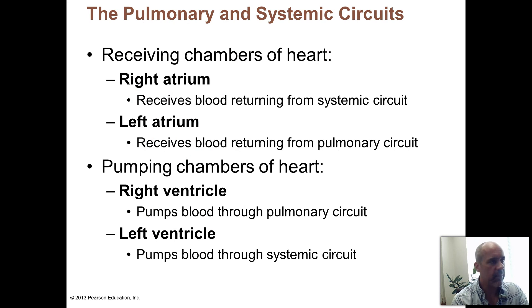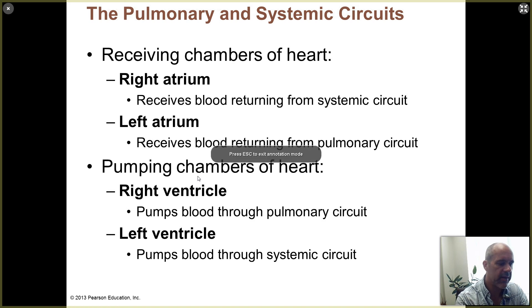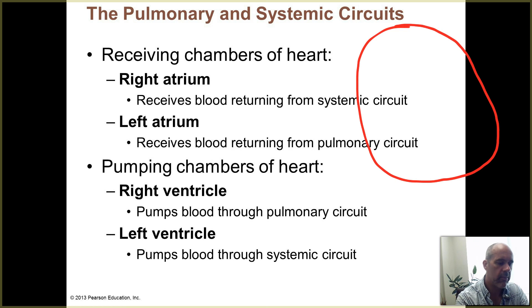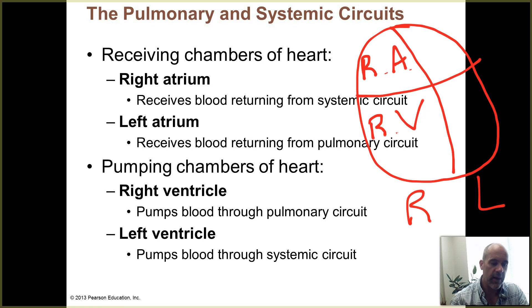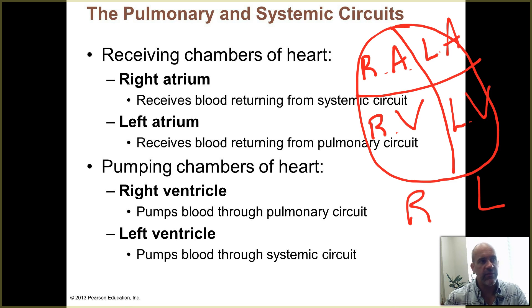Shortly, we're going to take a look at some heart anatomy using Visible Body to demonstrate it — it's very good for the heart. The heart is divided into four chambers. There's an upper right chamber called the right atrium, a larger lower chamber called the right ventricle, an upper left chamber called the left atrium, and a lower left chamber called the left ventricle.